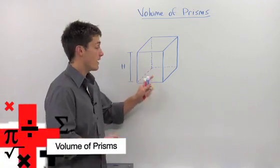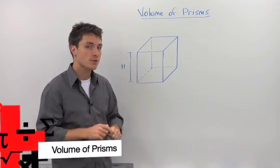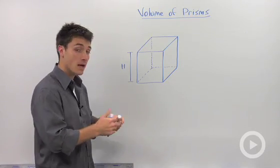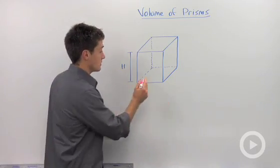If you want to calculate the volume of any prism, there's only two things that you need to know: one, what is the height of that prism, and two, what is the area of one of your bases.